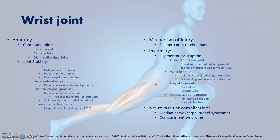Most wrist injuries are due to a fall onto the outstretched hand. Instability is associated with either ligamentous disruption or associated fractures — for example, disruption of the distal radioulnar joint, or injuries to the volar and dorsal radiocarpal complexes, the collateral ligaments, or the intrinsic carpal ligaments such as the scapholunate, lunotriquetral, or the TFCC.